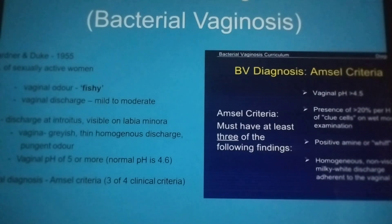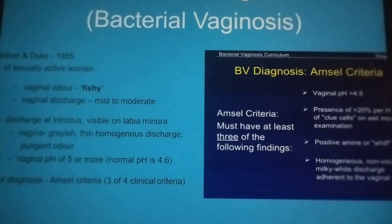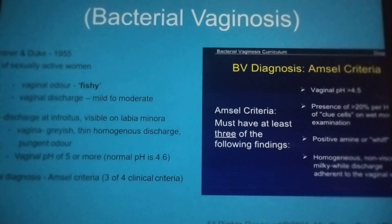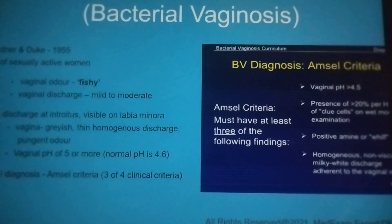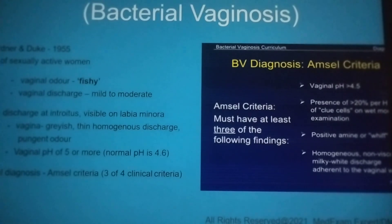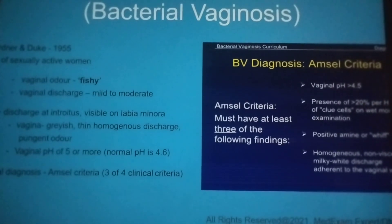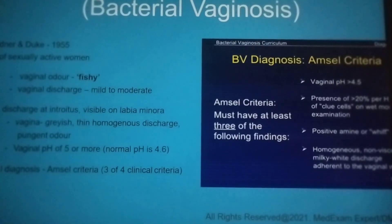For clinical diagnosis, we have the Amsel criteria. We have to satisfy 3 out of 4. In the diagram on the right side, you have your Amsel criteria. So you must have at least 3 of the following findings: a vaginal pH of more than 4.5; a presence of 20% per high-power field clue cells on wet mount examination; positive amine or whiff test; and a homogenous, non-viscous, milky-white discharge adherent to the vaginal walls.